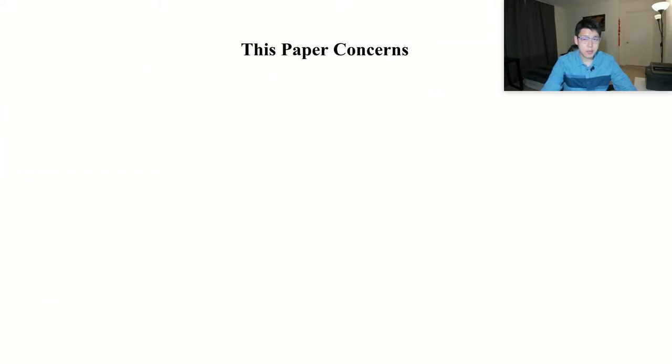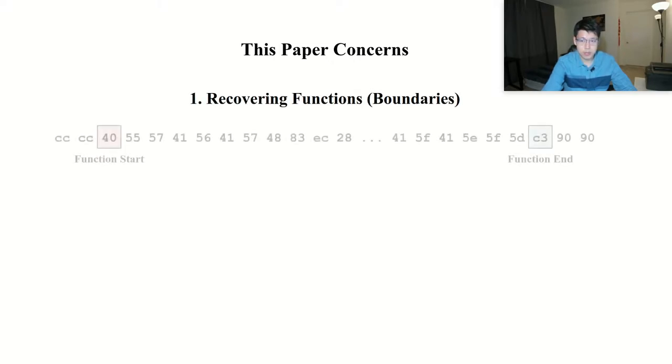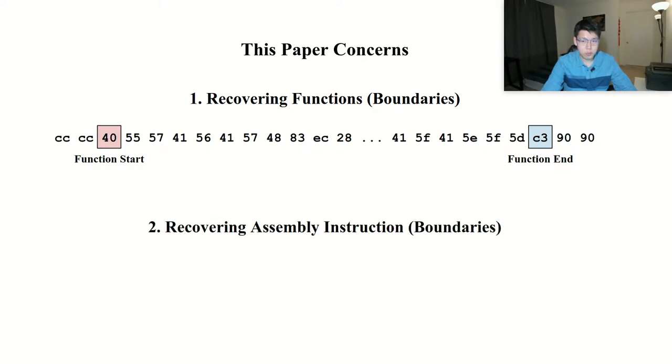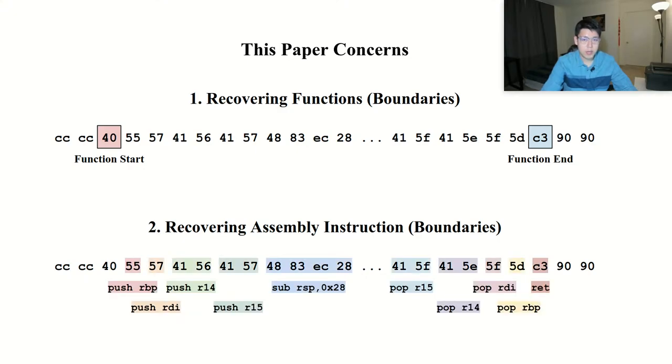In this paper, we focus on two disassembly tasks. The first task is to recover function boundaries. For example, given a sequence of raw bytes of a binary program, we aim to identify the function boundaries such as the function start and its corresponding function end. The second task is to recover assembly instructions. Similarly, given a sequence of raw bytes of a binary program, we aim to recover the corresponding assembly instructions.